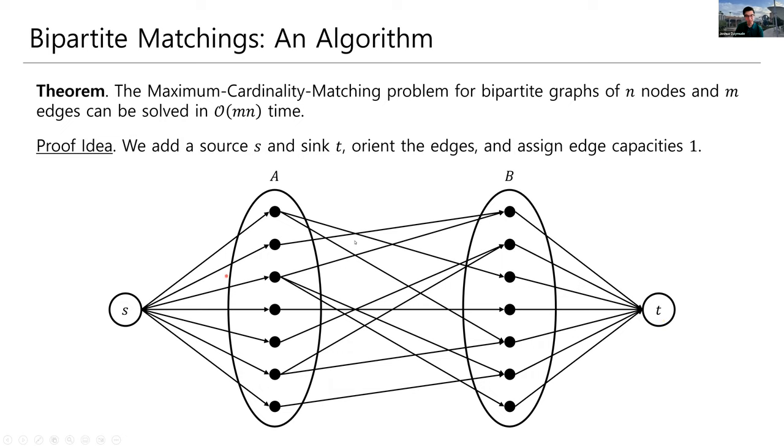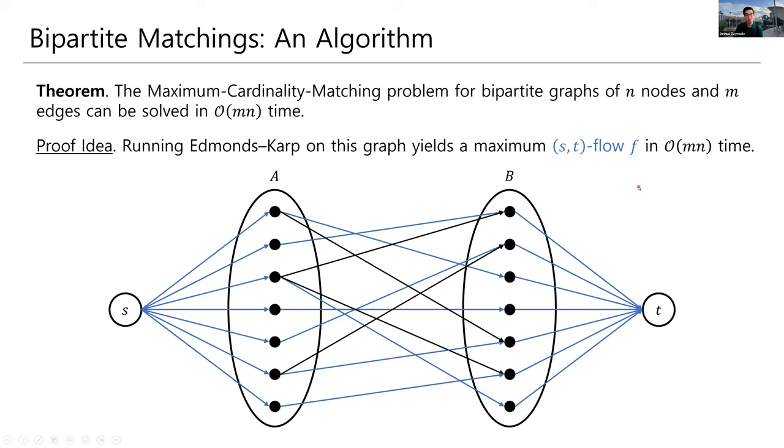Next, we assign edge capacities to all of these things. So, for us, for this purpose, edge capacity one will work perfectly fine. Then, we run Edmunds Carp on this thing. So, Edmunds Carp from a few lectures ago is an algorithm for maximum ST flows, right? And, clearly, S is on the left, T is on the right here. And, the only way we can get from S to T is by using some of the edges that were in the original graph, right? Before we did this transformation.